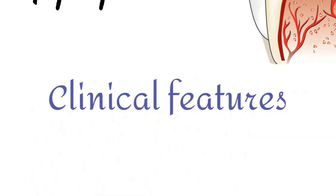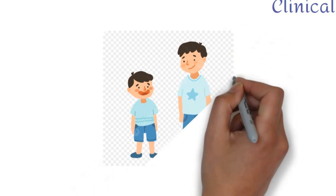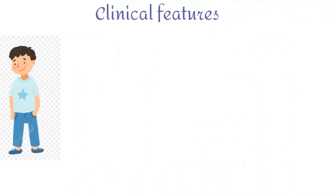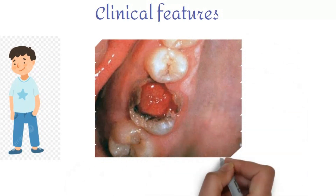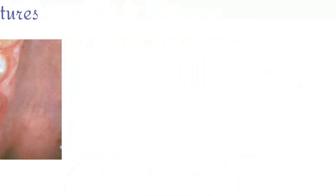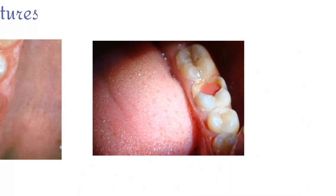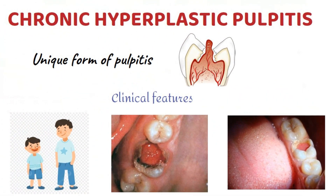Clinical features: Commonly seen in children and young adults with a high degree of resistance and reactivity. It is seen in large open cavities, especially in molars. The pulp appears as a pinkish-red globule of tissue protruding from the pulp chamber. Bleeding on probing may or may not be present.